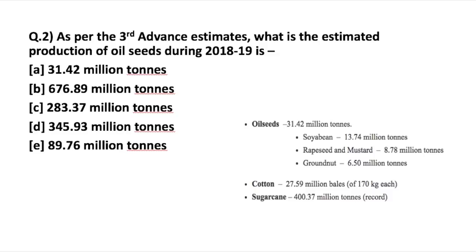Moving on to the next question: as per the third advanced estimates, what is the estimated production of oil seeds during 2018-19? Oil seeds production is estimated to be 31.42 million tons, where soybean is the major contributor. A possible question could be: which crop was the major contributor among oil seeds as per the third advanced estimate? Soybean is expected to contribute 13.74 million tons out of 31.42 million tons of total oil seeds.